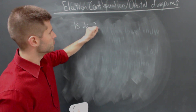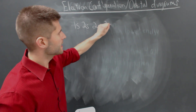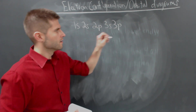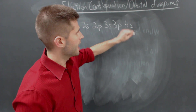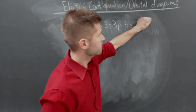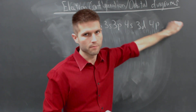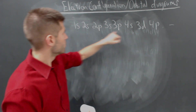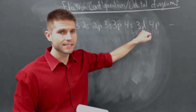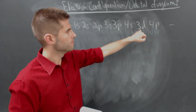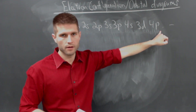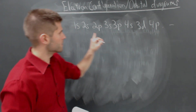After 2s comes 2p, then 3s, 3p, 4s, and then we drop down to 3d, back up to 4p, and so on. Now, we don't know why this is out of order yet, but we will. For right now, just know that this is the order according to Aufbau's Principle of how we fill.